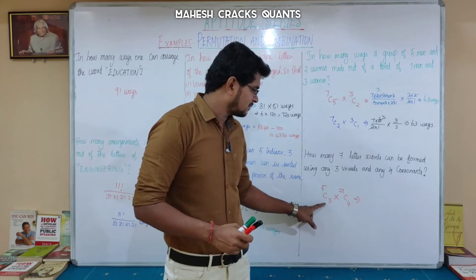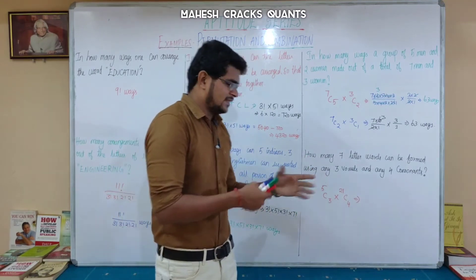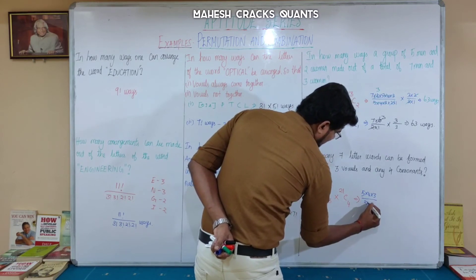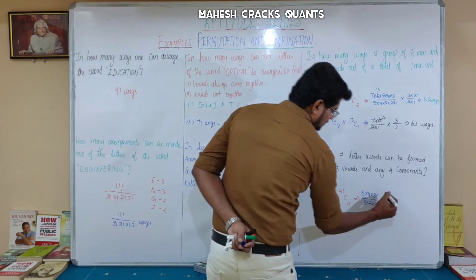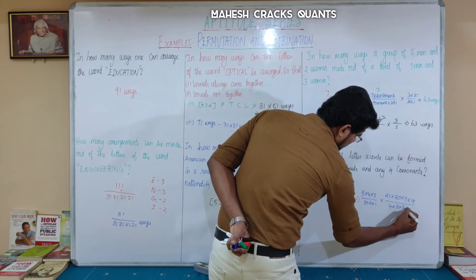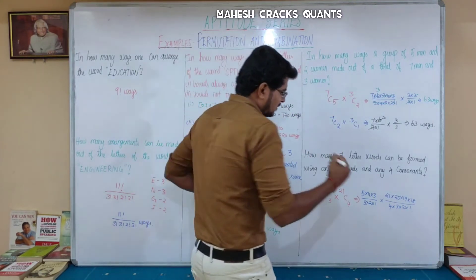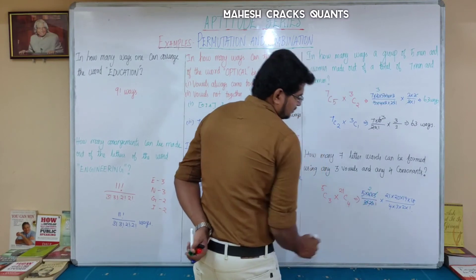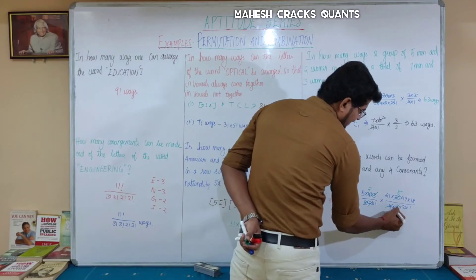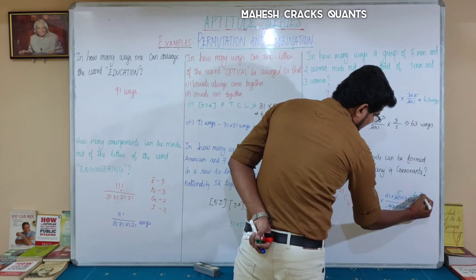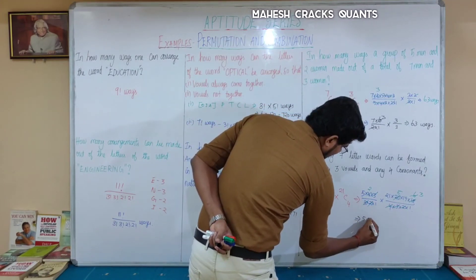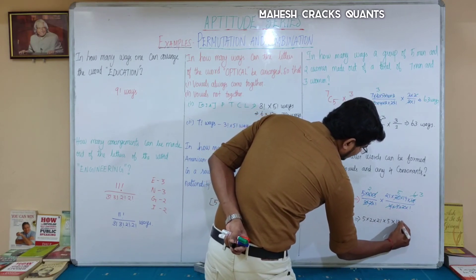Expanding C(5,3): 5 × 4 × 3 / (3 × 2 × 1) = 10. Expanding C(21,4): 21 × 20 × 19 × 18 / (4 × 3 × 2 × 1). Cancelling: 4 cancels with 20 to give 5; 3 cancels with 18 to give 6; 2 cancels with 6 to give 3. Remaining: 21 × 5 × 19 × 3 = 5 × 2 × 21 × 5 × 19 × 3.